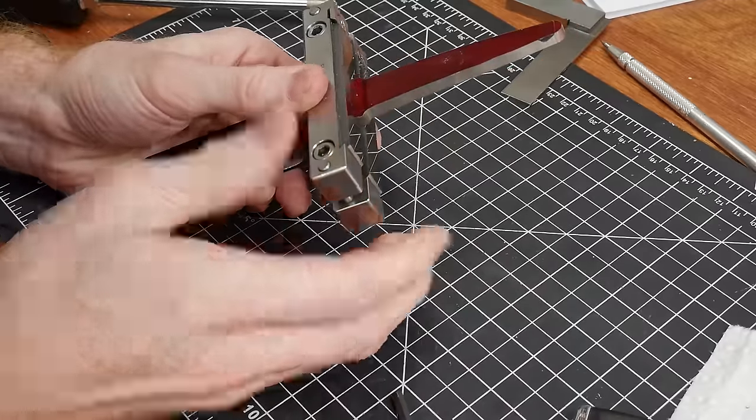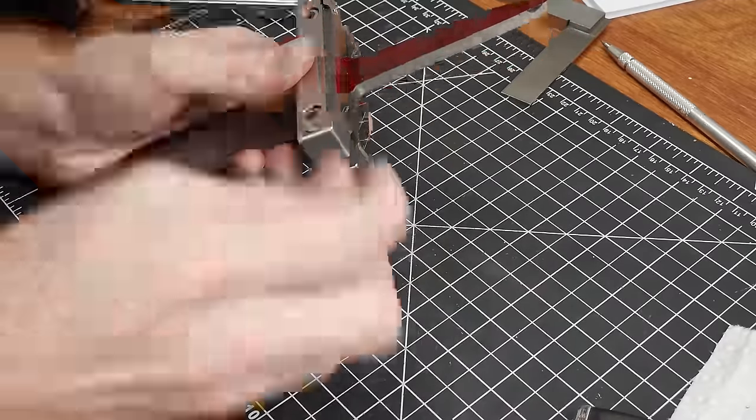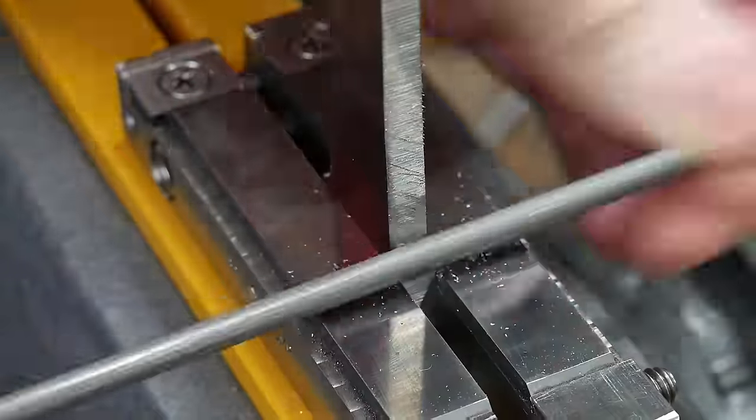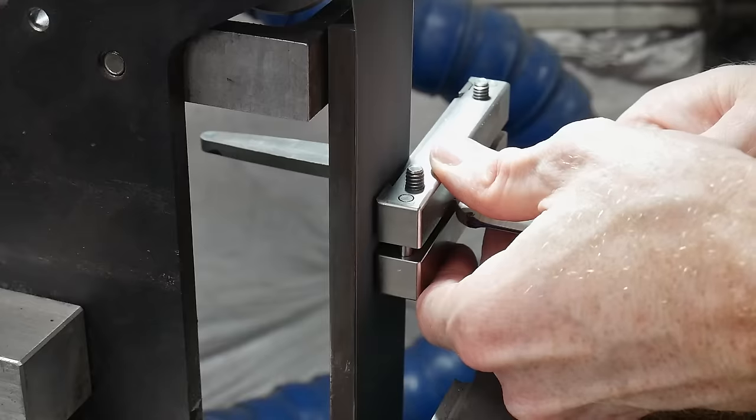While everything is still soft I'll file in the radius of my tang shoulders with a chainsaw file and then get them good and flat with the carbide faces of the guide on the grinder.